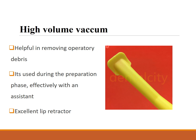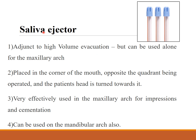High volume vacuum suction tips are helpful for removing debris during the preparation phase, and are effectively used with an assistant. The saliva ejector is used for evacuation of saliva or fluids. It can be used alone for the maxillary arch, placed at the corner of the mouth, and is also effective for the mandibular arch. The patient's head is turned towards it and it is very effectively used for impression and cementation.